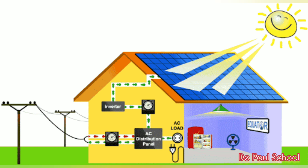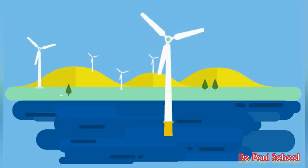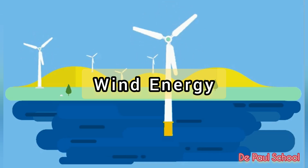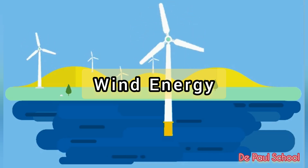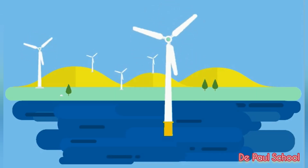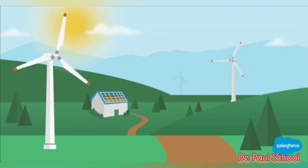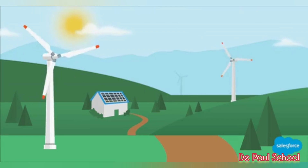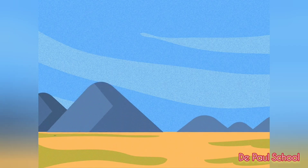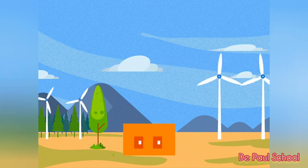Now the next form of energy is wind energy. Wind is nothing but moving air. So the energy produced by the power of moving air is called wind energy.